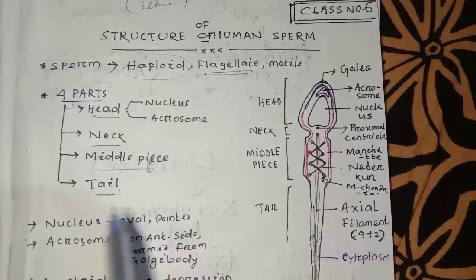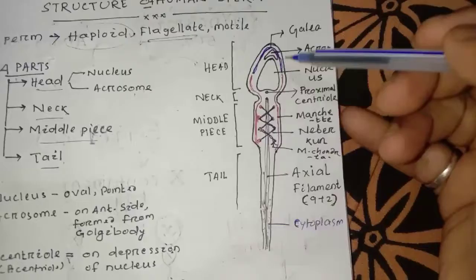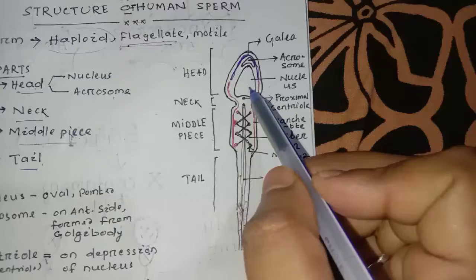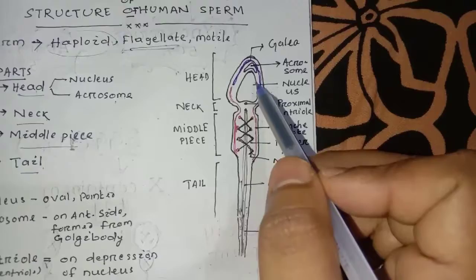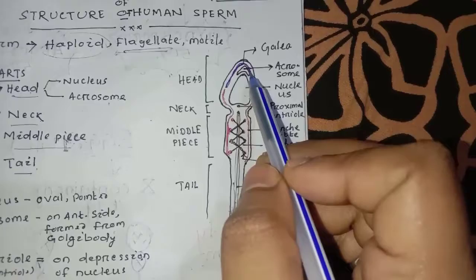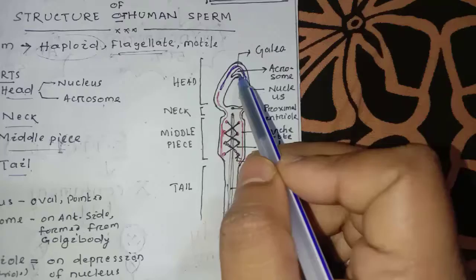Here is the complete sperm structure. This is the nucleus structure — it is rounded and pointed. This is the acrosome, which is a major part of the sperm head. It has a triangular shape. This is the nucleus and acrosome.